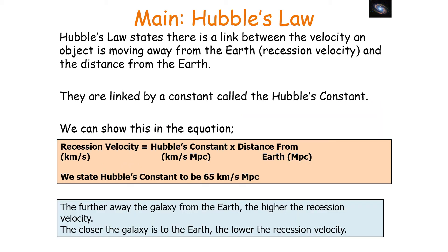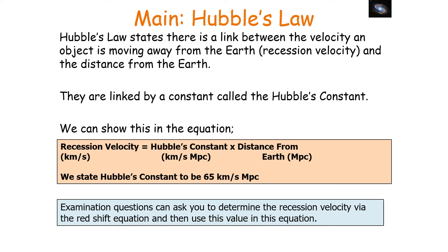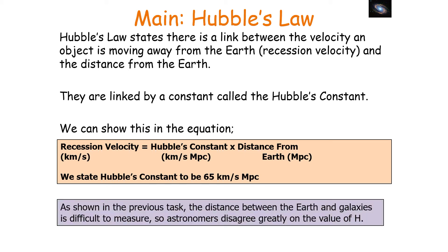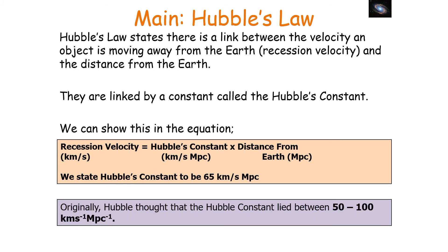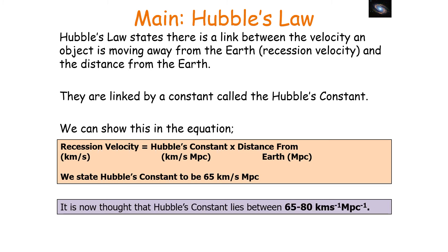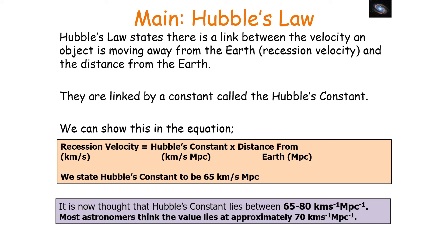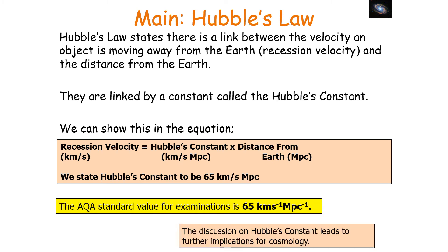Hubble's Law states that there is a link between the recession velocity — the velocity an object moves away from Earth — and the distance from Earth, linked by Hubble's constant: recession velocity equals Hubble's constant times distance. The further the galaxy, the higher the recession velocity; the closer, the lower. Originally the Hubble constant was thought to lie between 50 and 100 km/s/Mpc, now thought to be between 65 and 80, with most astronomers today favouring 70 km/s/Mpc, whilst the AQA standard value is 65 km/s/Mpc.